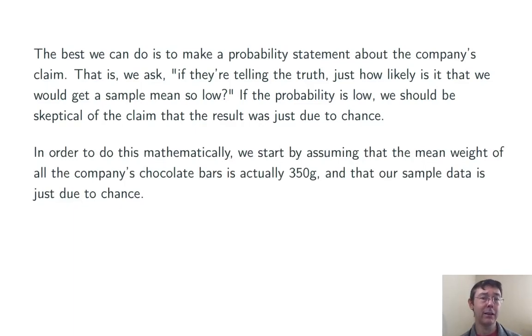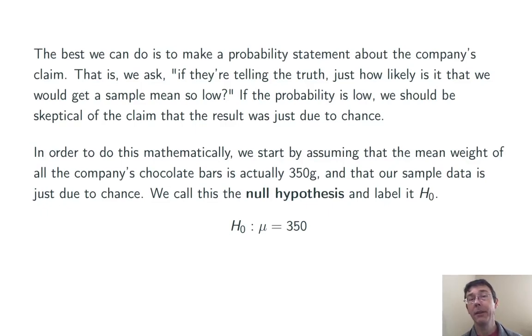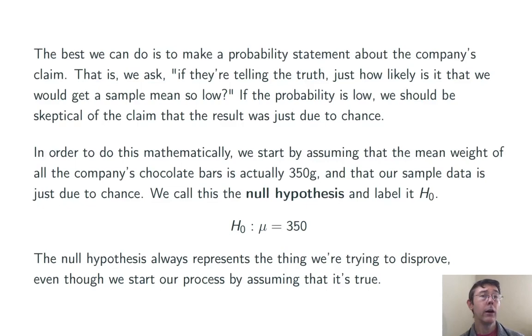In order to do this mathematically, we're going to start by assuming that the mean weight of all the chocolate bars is actually 350 grams. We're going to start by assuming that the company's claim is true. If you look at that statement I have in quotes in that top paragraph, you can see this assumption in words, if they're telling the truth. We're going to call this the null hypothesis and label it H naught. In this case, the null hypothesis is that the population mean of all the chocolate bars is exactly 350 grams. Counterintuitively, the null hypothesis represents the thing that we're trying to get evidence against, that we'd like to disprove. But we start our process by assuming that it's true.